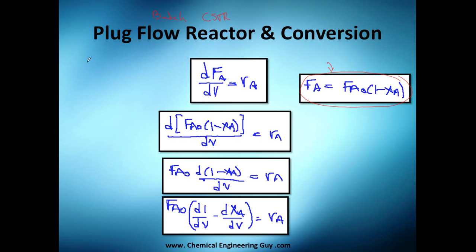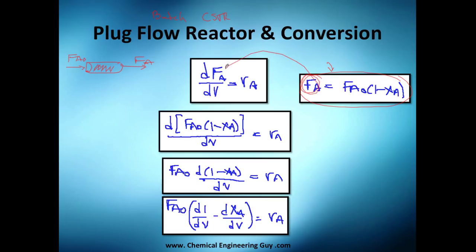The plug flow reactor has an inlet where reactants enter a tube and an outlet at the other end. The design equation states that the derivative of the molar flow of A with respect to volume equals the rate of reaction of A.